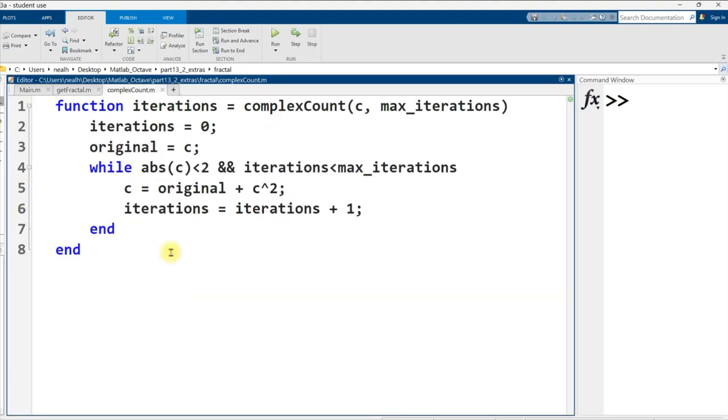All right, let's look at the complexCount function. So it takes in a complex number and a maximum number of iterations. It keeps a copy of the original complex number, which is important because that's part of the calculation. And then as long as the absolute value of the complex number is less than 2, and we haven't reached the maximum number of iterations, then loop. This is the calculation: Take the original number, add the square of the complex number, and that's our new number. Increase the count of how many iterations have elapsed, and that's what we return.